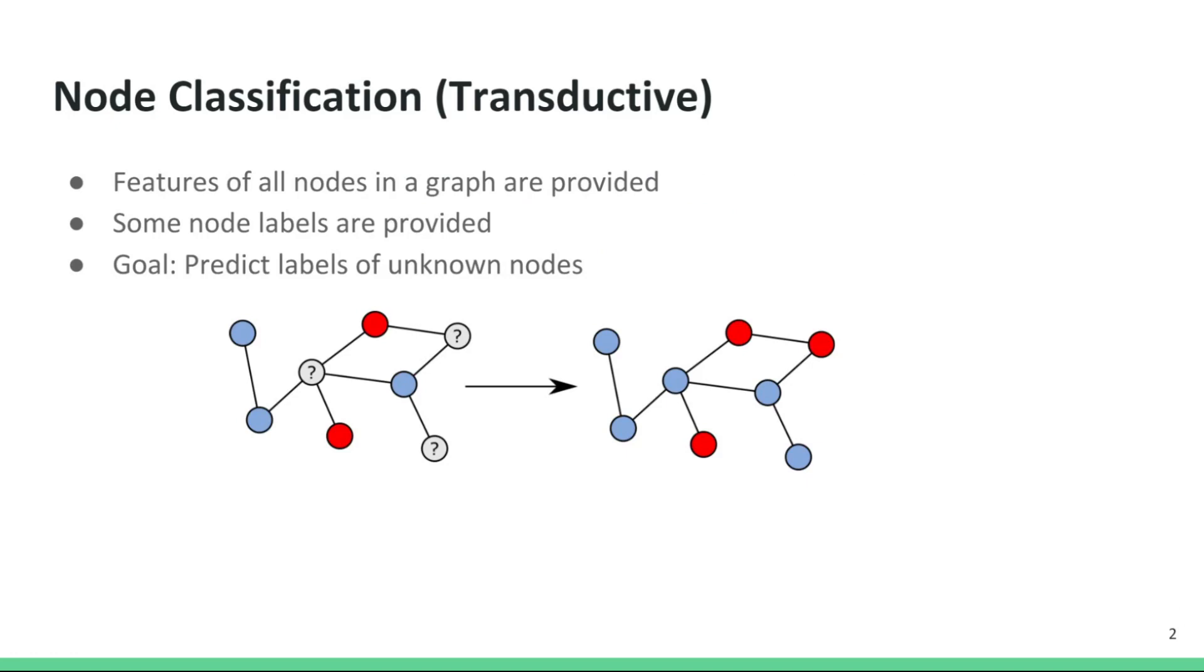We are given a graph with some nodes labeled and some unlabeled. The goal is to predict labels of the unlabeled nodes. These nodes may have attributes or features associated with them. In a transductive setting, like the one shown here, the features and connectivity of the unlabeled nodes are available during training.